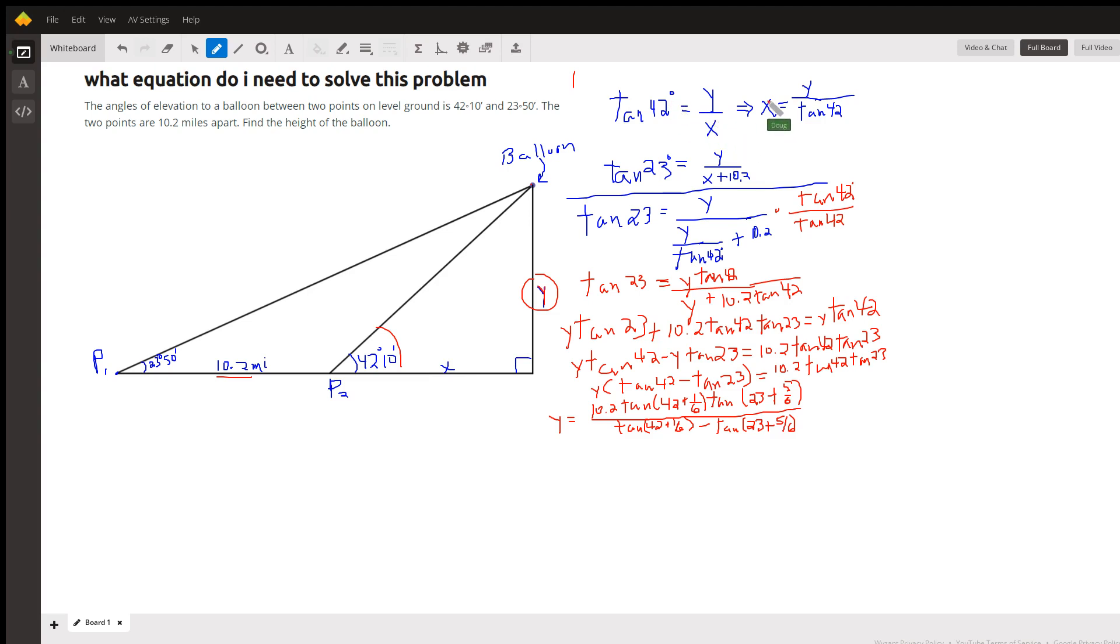And that allows us to say that X equals Y over the tangent of 42. And then for the big triangle, the tangent of 23 degrees 50 minutes is Y over this entire segment here, X plus 10.2.